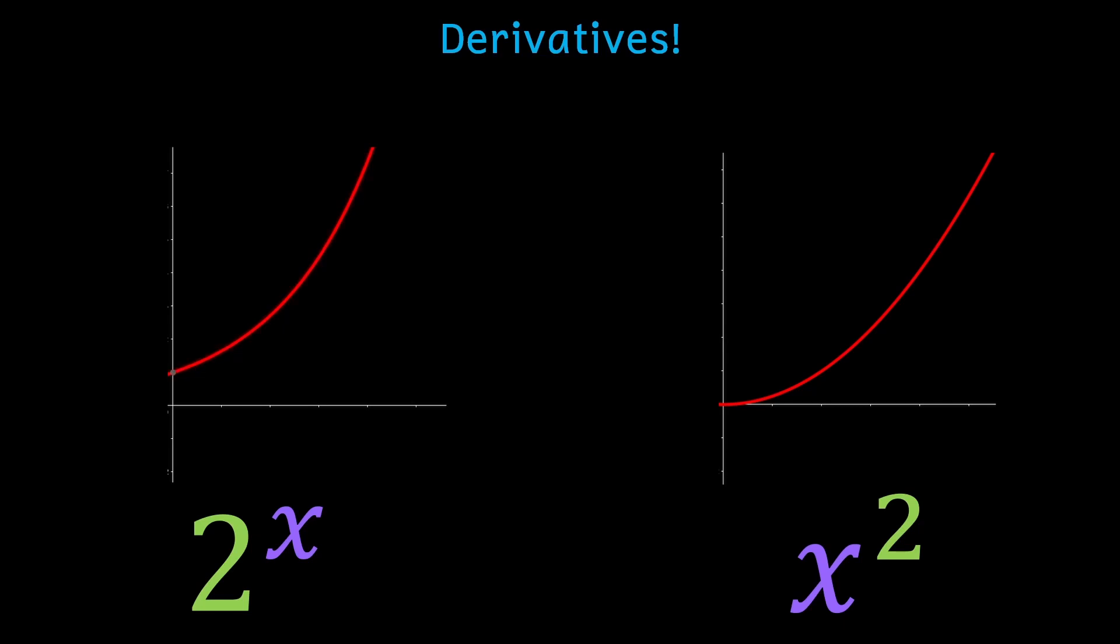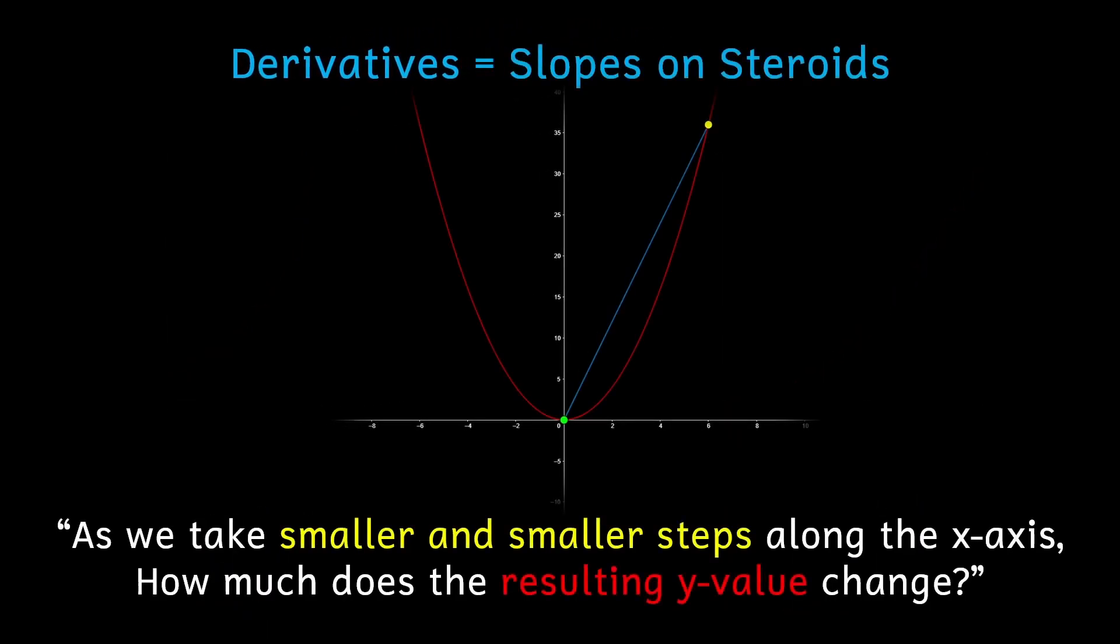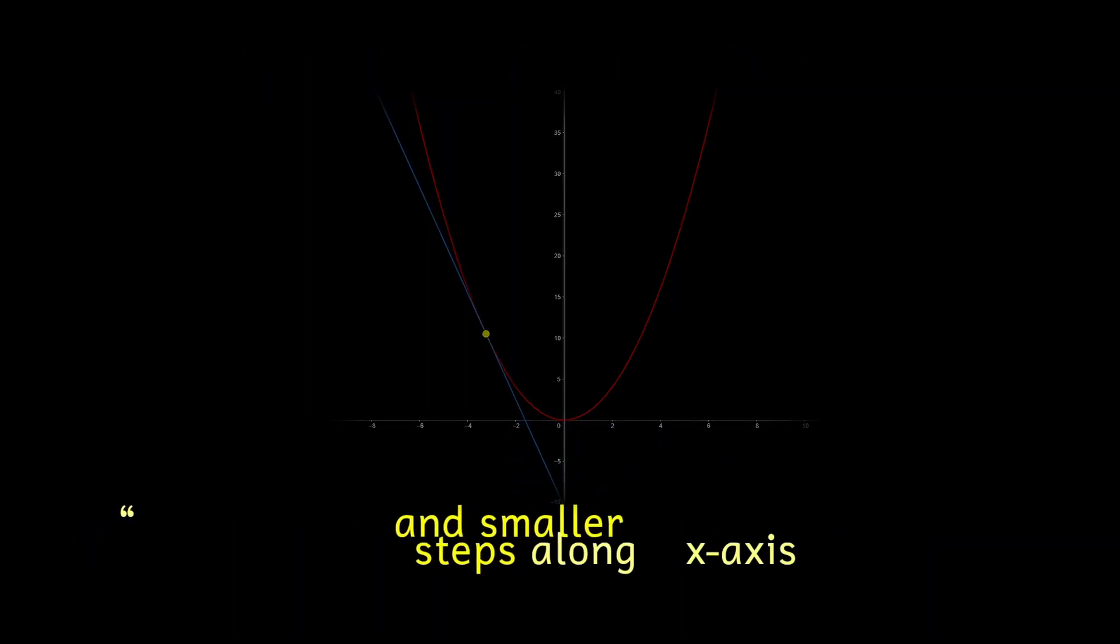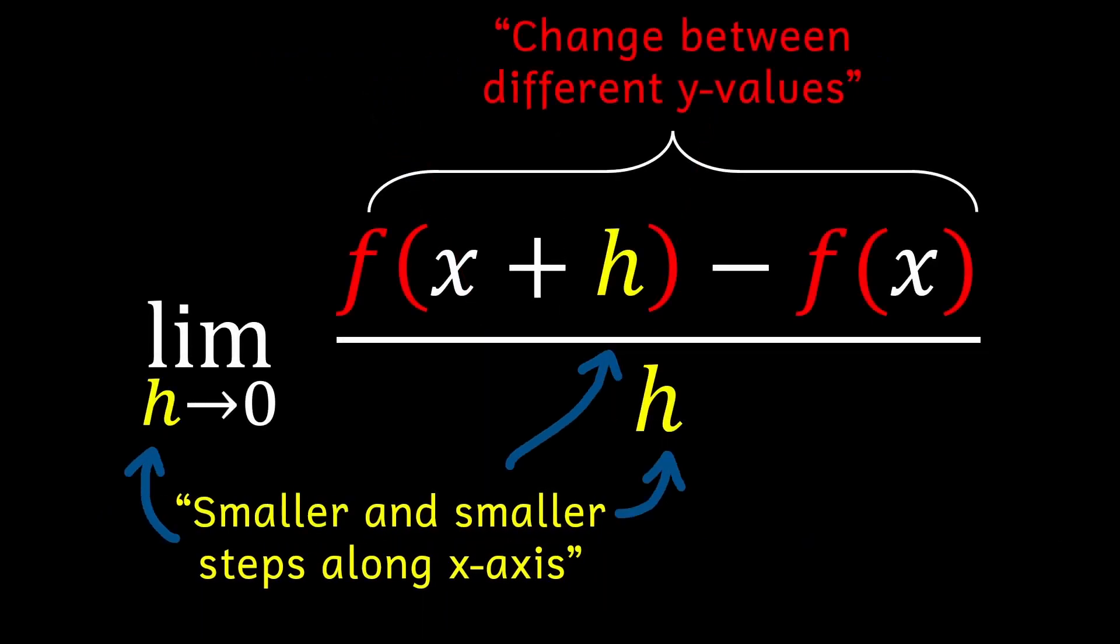Essentially, what a derivative does is it allows us to express the slope of a function at any point on the curve by asking this question. As we take smaller and smaller steps along the x-axis, how much does the resulting y value change? In terms of a formula, this is what that statement translates to. And it's the key to unlocking why exponential functions are unique.